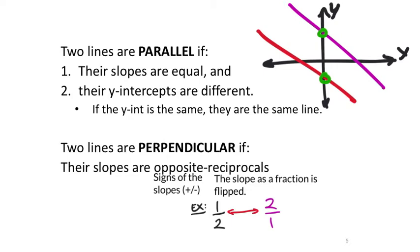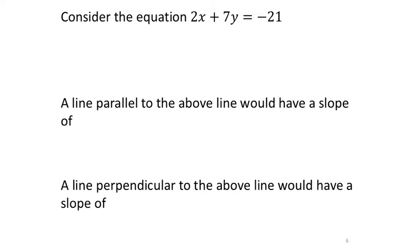Perpendicularity tells us that between the two lines, it creates a 90-degree angle. To demonstrate perpendicularity: if we have a slope of positive one-half, we reciprocate the fraction, but it also has to change the sign from positive to negative. Here is an example equation in standard form: 2x plus 7y equals negative 20.